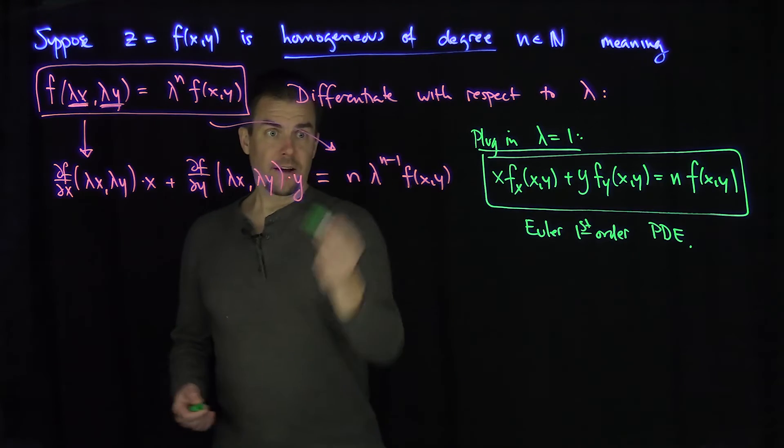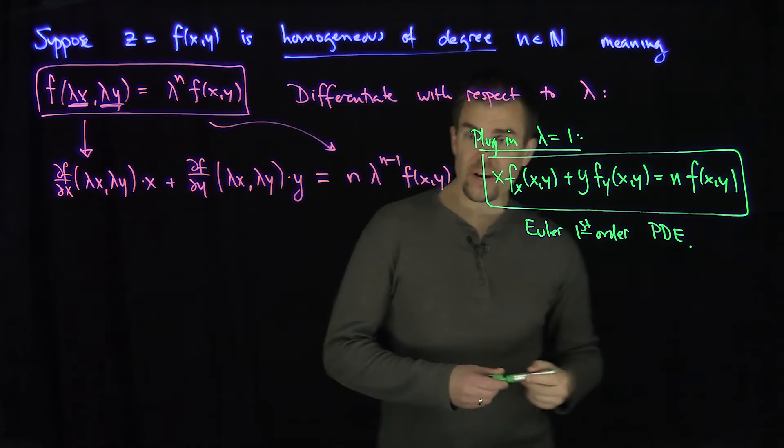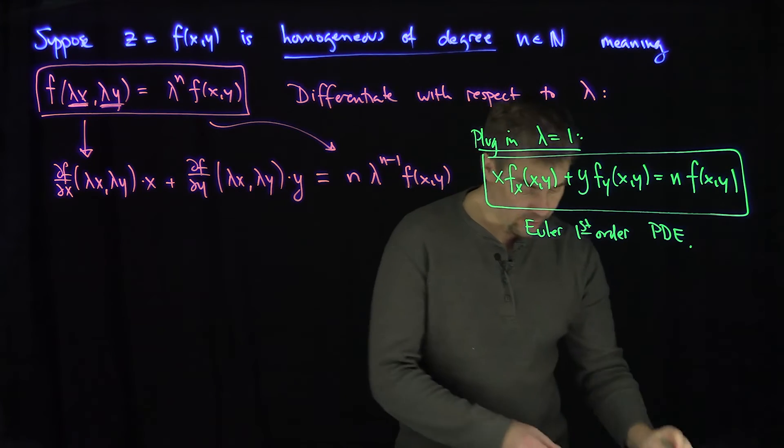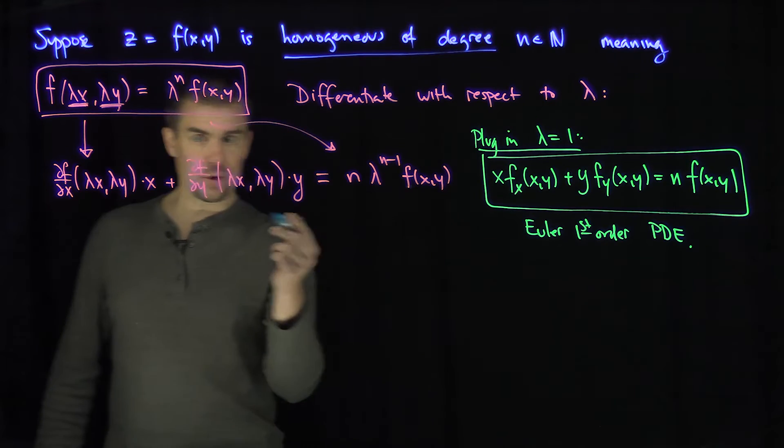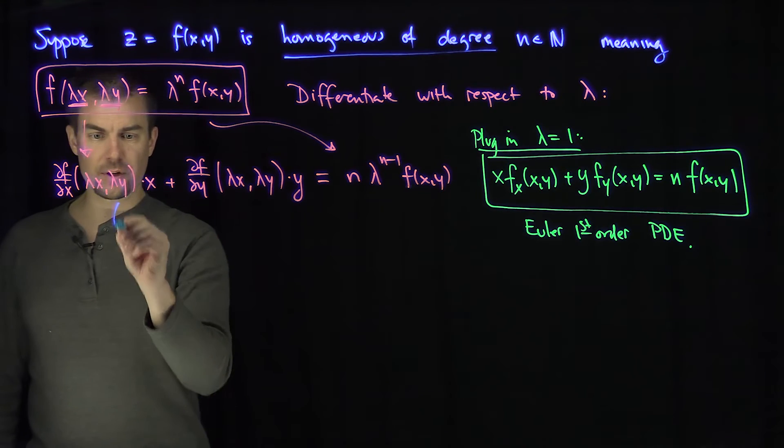And if n is sufficiently large, I can perform this differentiation again and find a second-order PDE. So let's differentiate with respect to lambda once more.